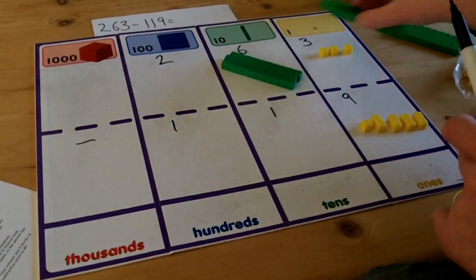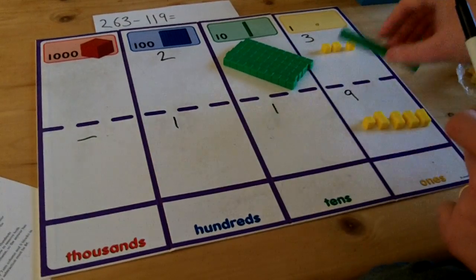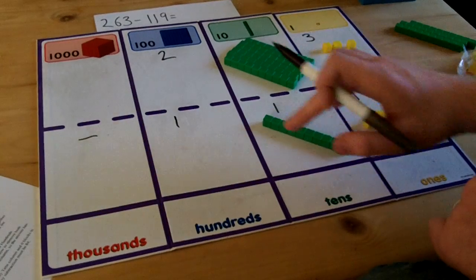This means putting six on top of the 60 to show there are 60, and one on top of the 10 to show there is 10.